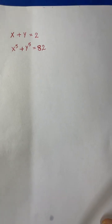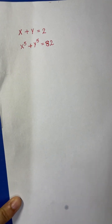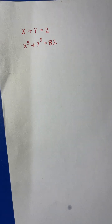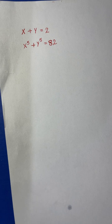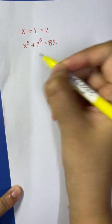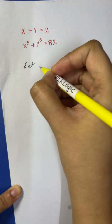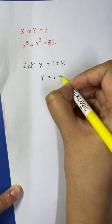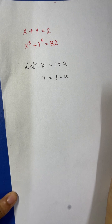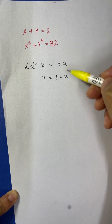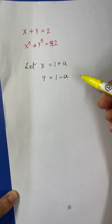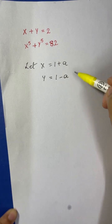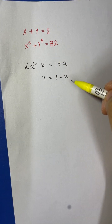Now the other method — which is also easy and not that tough — is the substitution approach. We assume x equals 1 plus a and y equals 1 minus a. The reason for doing this is that the sum will be 2, and the system will reduce to an equation in one variable.